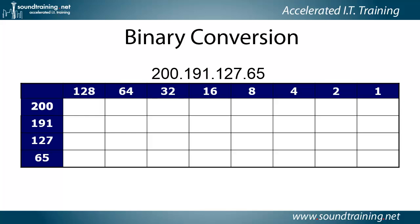The first thing we do is ask: can we subtract 128 from 200? The answer is yes, so we put a 1 in the 128's column, leaving a remainder of 72. Can we subtract 64 from 72? Yes, so we put a 1 in the 64's column, leaving a remainder of 8. Can we subtract 32 from 8? The answer is no, so we put a 0 there.